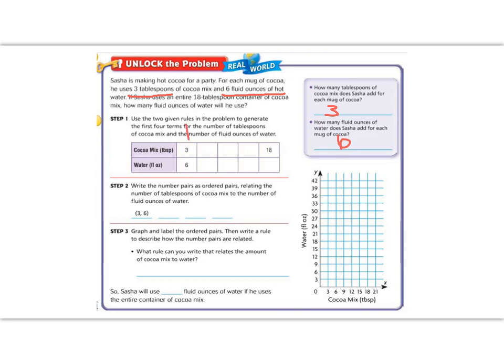So if I'm going to make one mug of cocoa, then it would take me three cocoa teaspoons and six fluid ounces. If I made two, then I would have to double that number. So I would need six teaspoons of cocoa mix and six plus six is twelve.